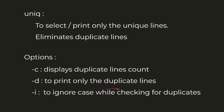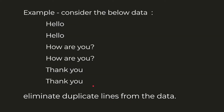The -d option prints only the duplicate lines and does not print lines which are unique in the file. Normally the unique command takes the case of letters into consideration, but if you want to ignore case you can use the -i option to perform case-insensitive comparison. Consider this data — every line is repeated twice: 'hello' is repeated twice, 'how are you' is repeated twice, and 'thank you' is also repeated twice.